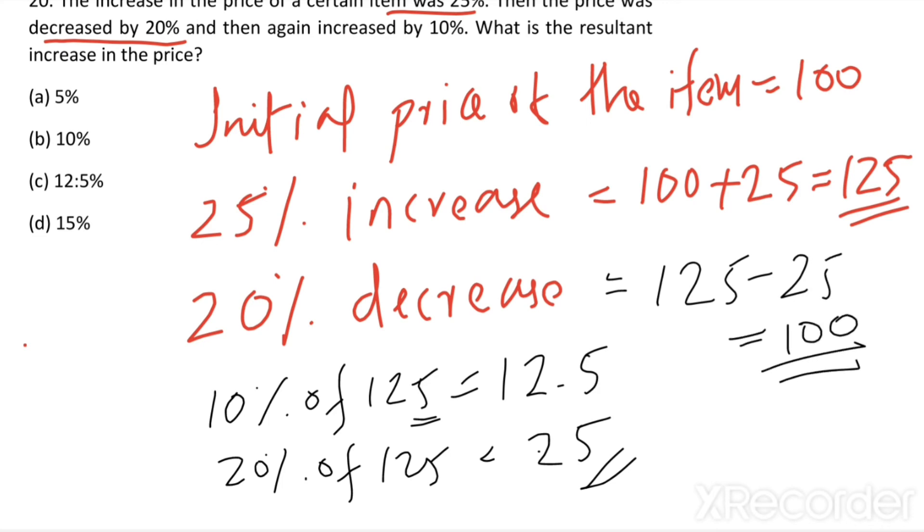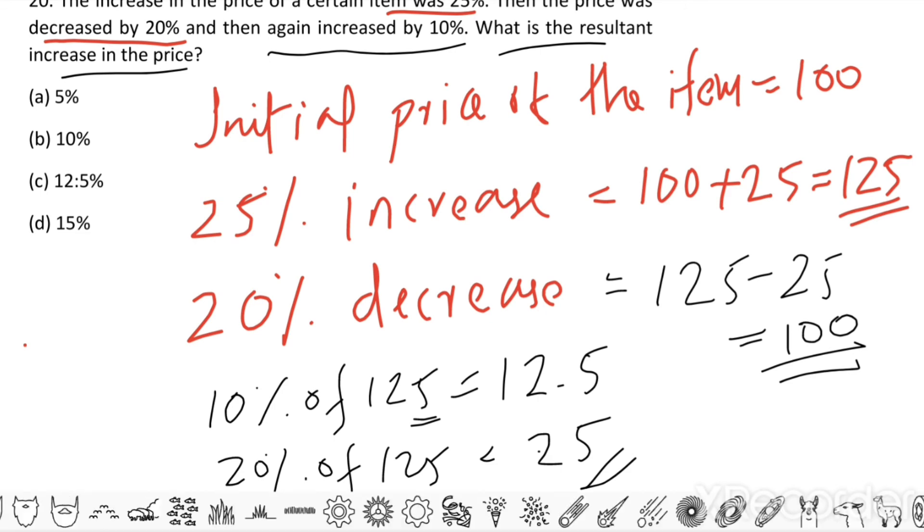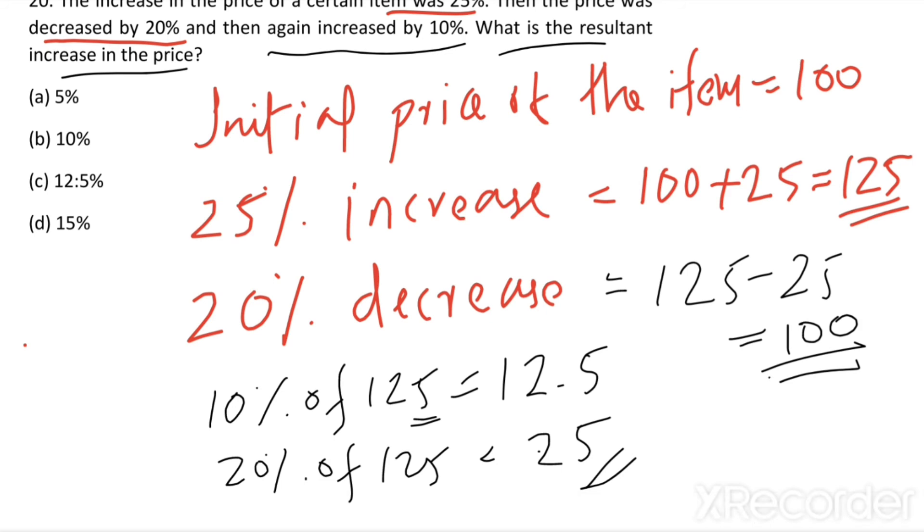So here we got the initial price of the item. Then again increased by 10%. What is the resultant increase in the price? So resultant increase in the price means after this 100 again increased by 10%. The resultant increase in the price is equal to 10%. Option B is the right answer.